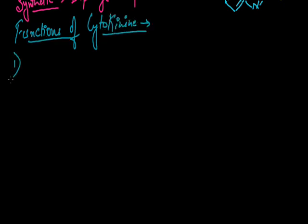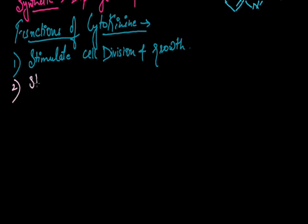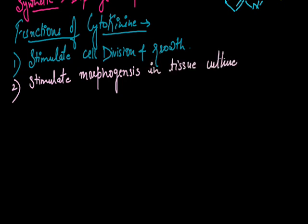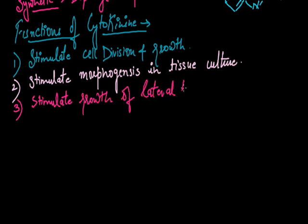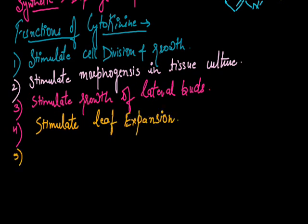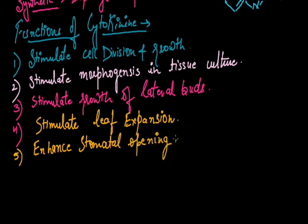Now we will discuss the functions of cytokinin. The first function of cytokinin is stimulate cell division in combination with auxin and also promote growth. The second is they stimulate morphogenesis, that is morphological formation of the plant part in tissue culture when they artificially grow a plantlet. The third is they also stimulate growth of lateral buds. Next is stimulate or promote leaf expansion.